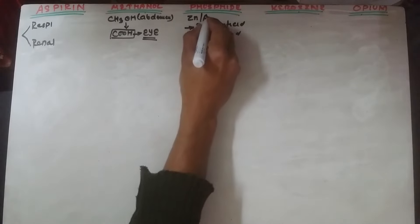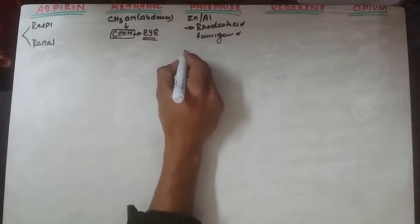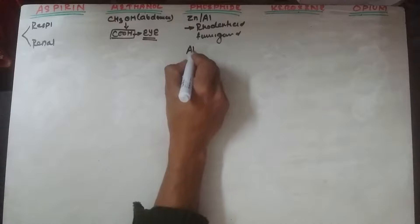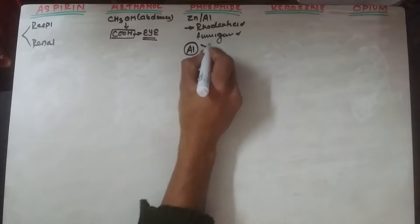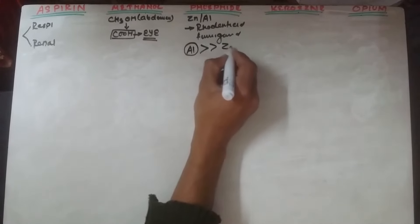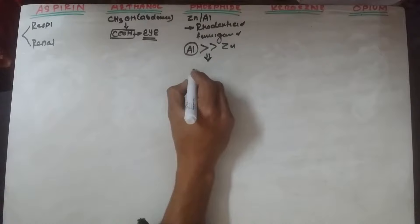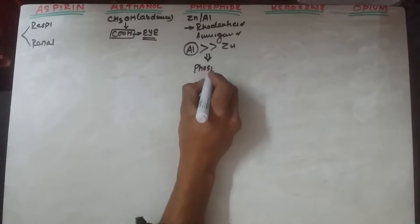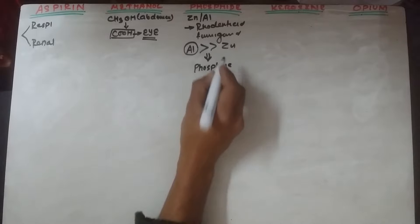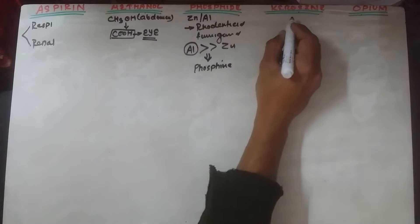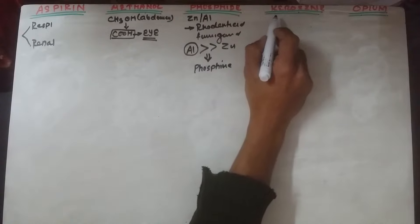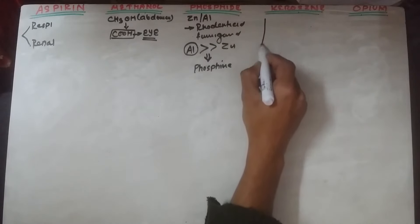Aluminium phosphide is very dangerous with almost 50% lethality, so it has a higher mortality rate compared to zinc phosphide. The component responsible for the toxic effect is phosphide gas formation.